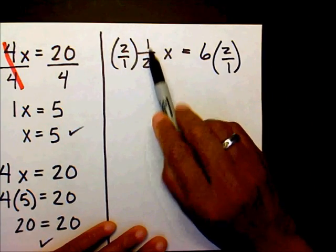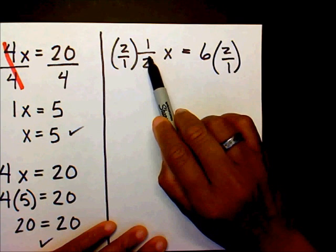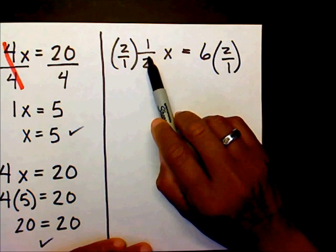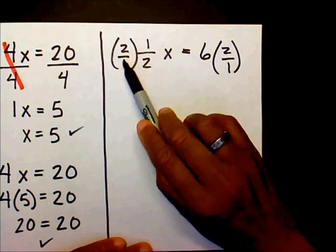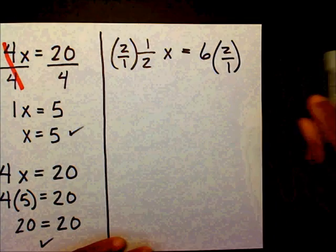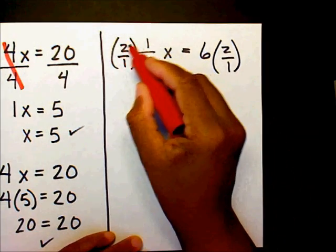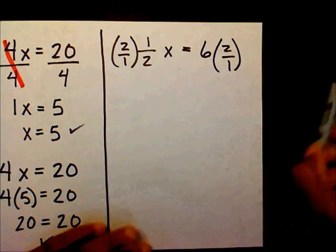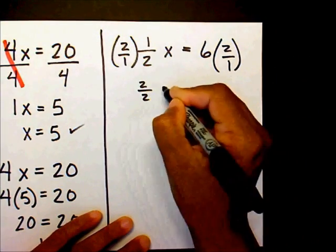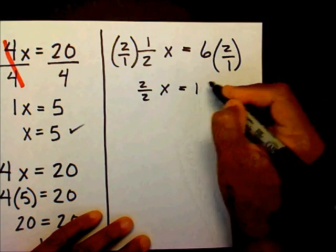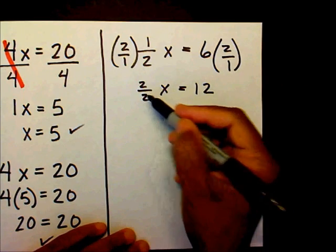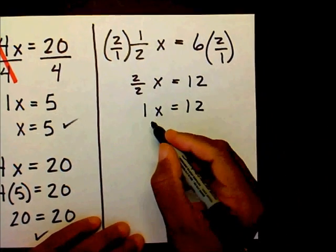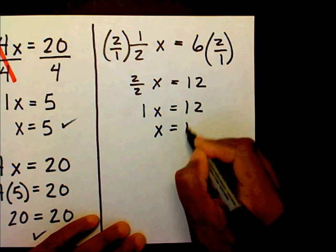2 times 1 is 2, and 1 times 2 is 2, so we're going to end up with 2 over 2x equals 6 times 2, which is 12. We know that 2 over 2 is really 1, so x equals 12. Instead of writing 1x, I can just write x equals 12.